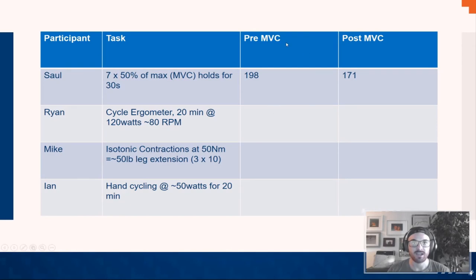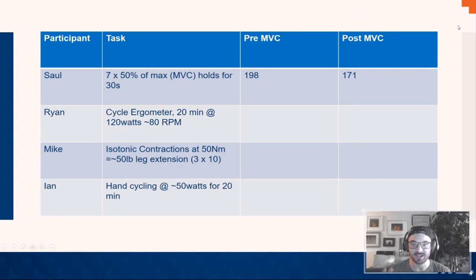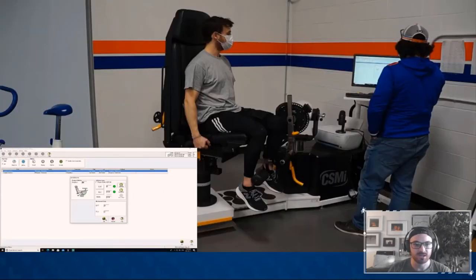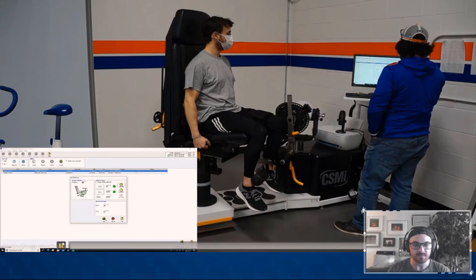Saul does his final max contraction. His pre-MVC was 198 Newton meters and his post was 171 Newton meters. I'll present the data as-is and let you take from it what you will. As you watch, make your guess — using the neuromuscular pathway figure — as to where the majority of that fatigue was occurring and why. We'll discuss the actual reasons in lecture.